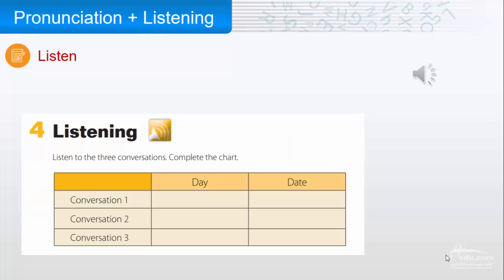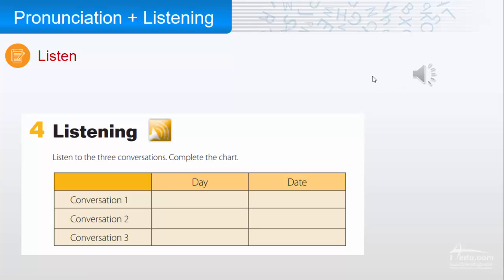Here we have a chart. You will listen to three conversations — one, two, and three. From each conversation, you will write the day and the date. Listen, please. Page 11, number four: Listening. Listen to the three conversations and complete the chart.